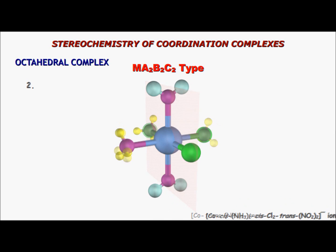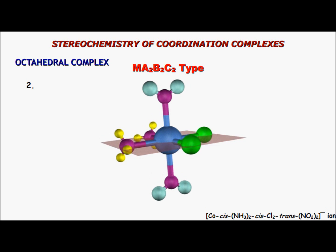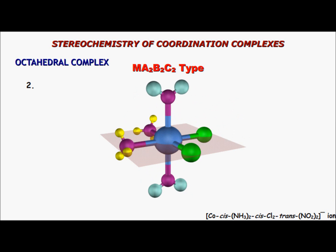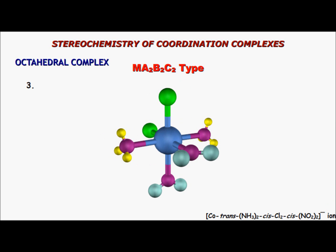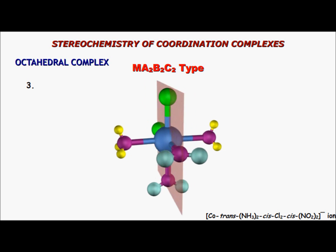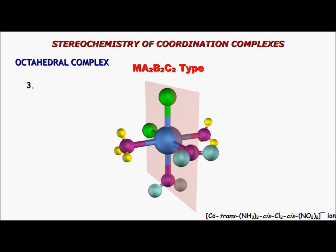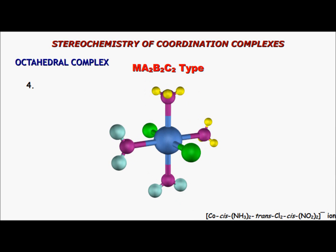The second isomer has amine and chlorido in the cis position, and nitrito in the trans position — this also has a plane of symmetry. The third has chlorido and nitrito in the cis position, and amine in the trans position — also has a plane of symmetry. The fourth has amine and nitrito in the cis position, and chlorido in the trans position — this one also has a plane of symmetry.